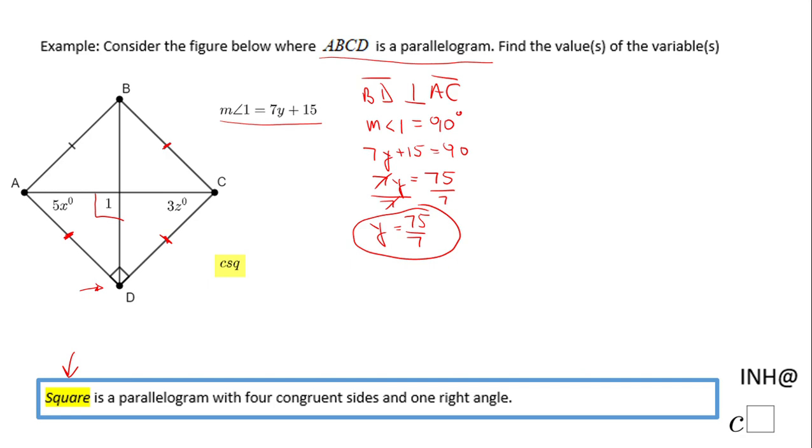Now we can look at x and z. Let's start with this angle that has x in it. That angle is 45 degrees. Why? Don't forget this is a square, so diagonal AC bisects angle BAD, which is 90 degrees.